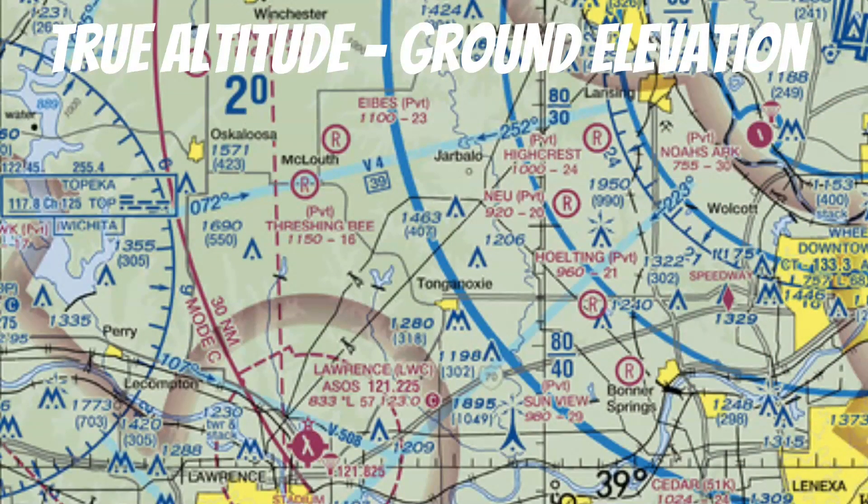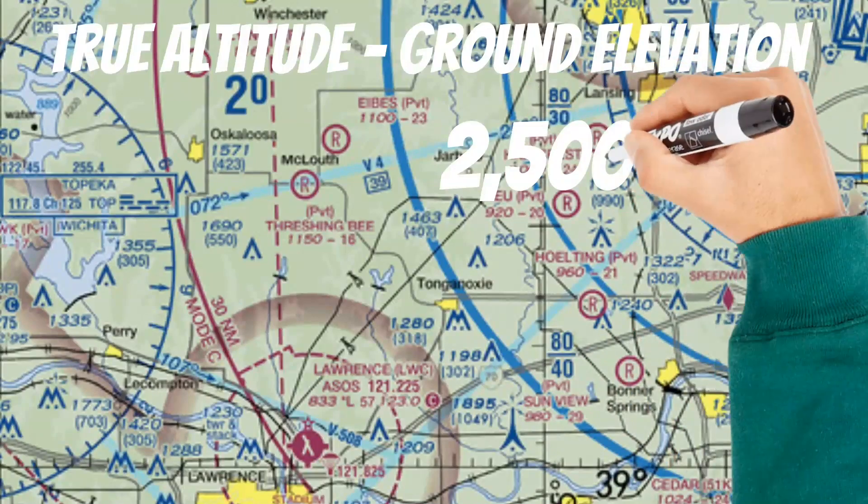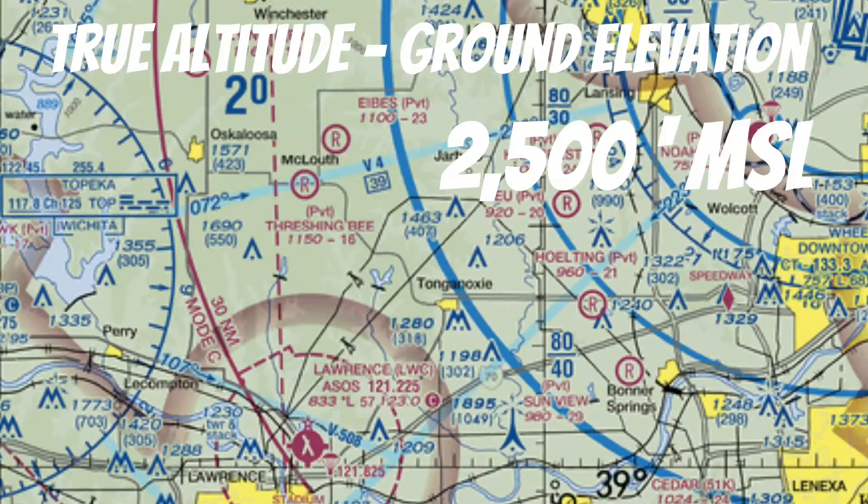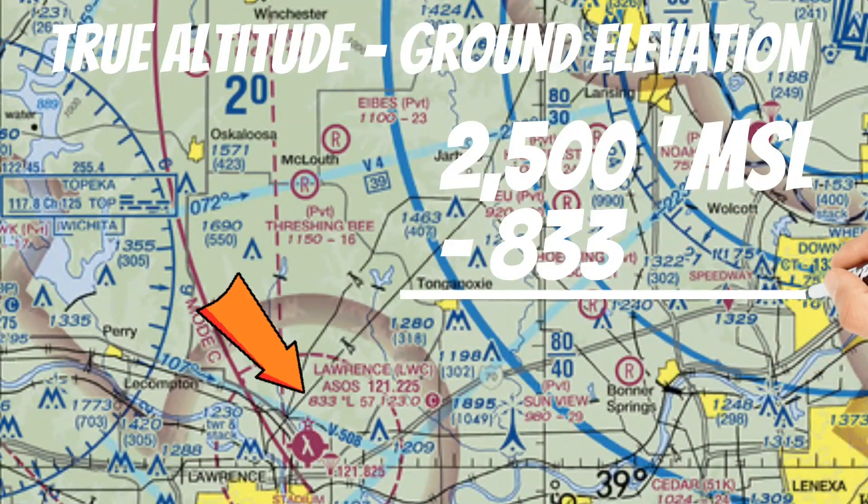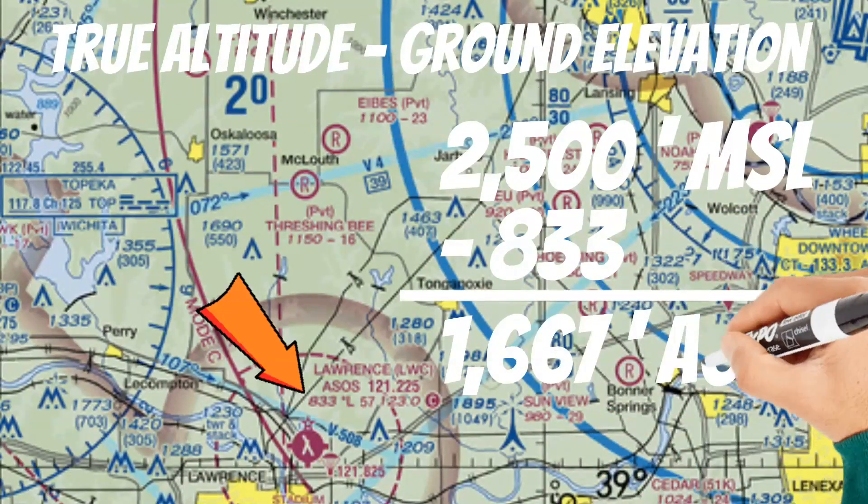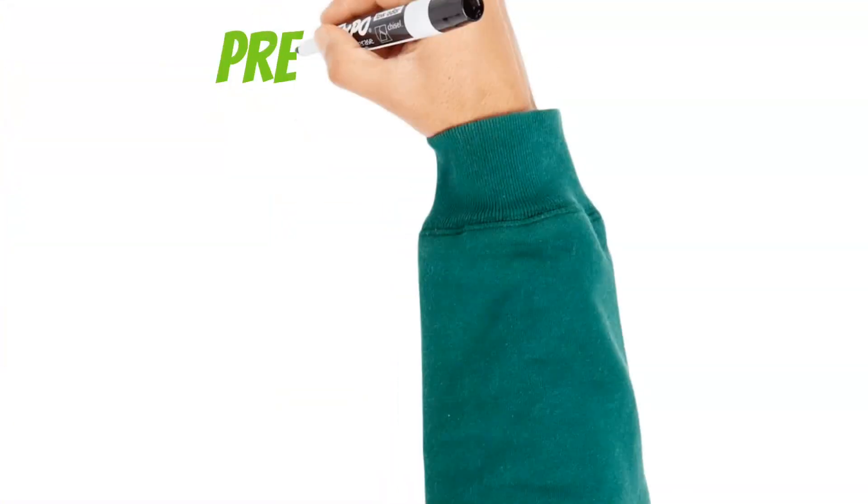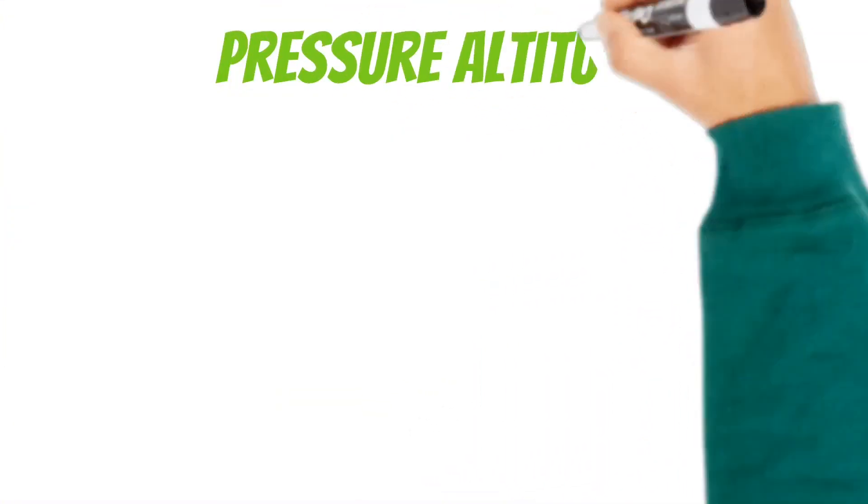For example, let's say I'm flying at a true altitude of 2500 feet MSL. If I fly over this airfield in Lawrence, Kansas that has an elevation of 833 feet, all I have to do is subtract 833 from 2500. And this gives us an absolute altitude of 1667 feet AGL.